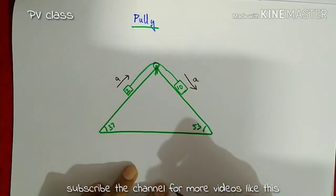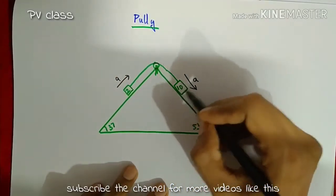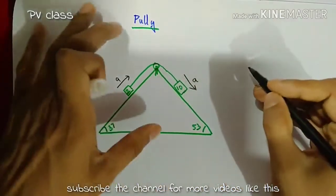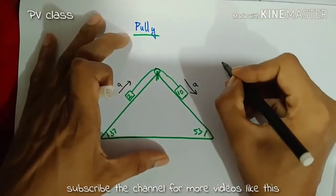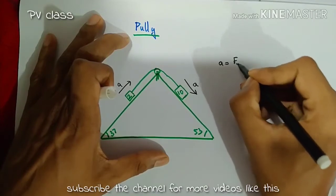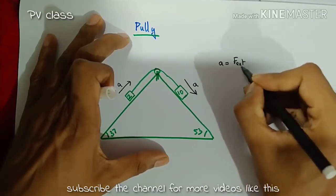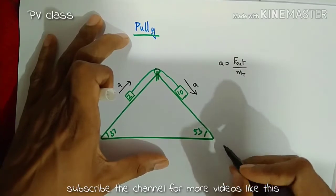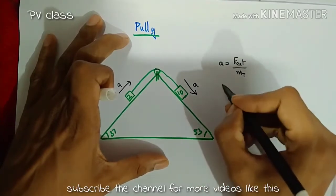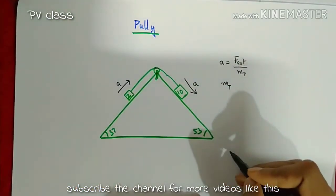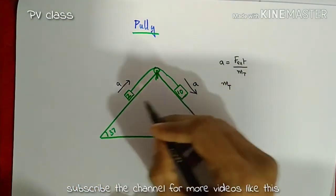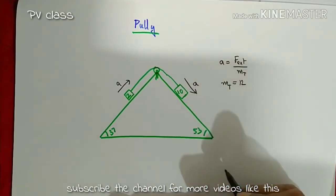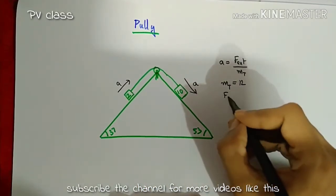Analyzing the 10 kilogram mass using the formula: net acceleration equals total external force divided by total mass. The total mass of the system is 2 plus 10, which equals 12 kg.